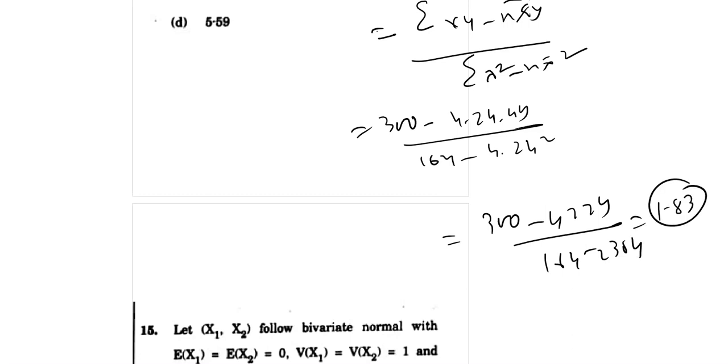So 1.83. Now we substitute y equal to 10. So 10 dalenge to beta 0, 1.83.